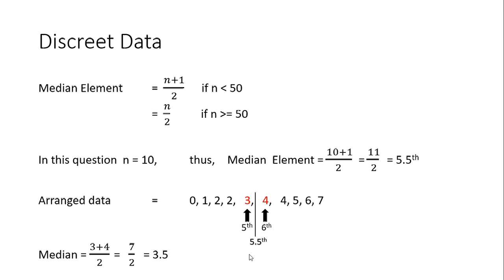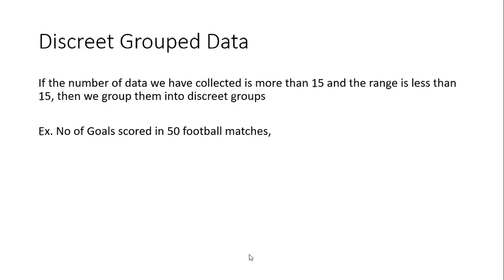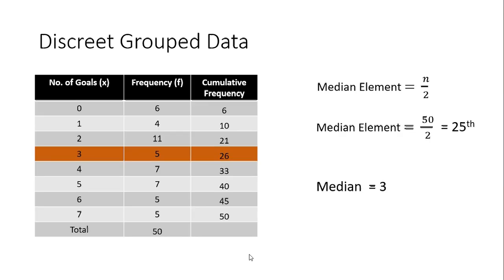Next we look at the discrete grouped data set. In this case we have 50 football matches and we arrange the goals scored into a discrete grouped data set. We have the number of goals (the x value), the frequency — the number of times that certain number of goals was scored — and a third column called the cumulative frequency.